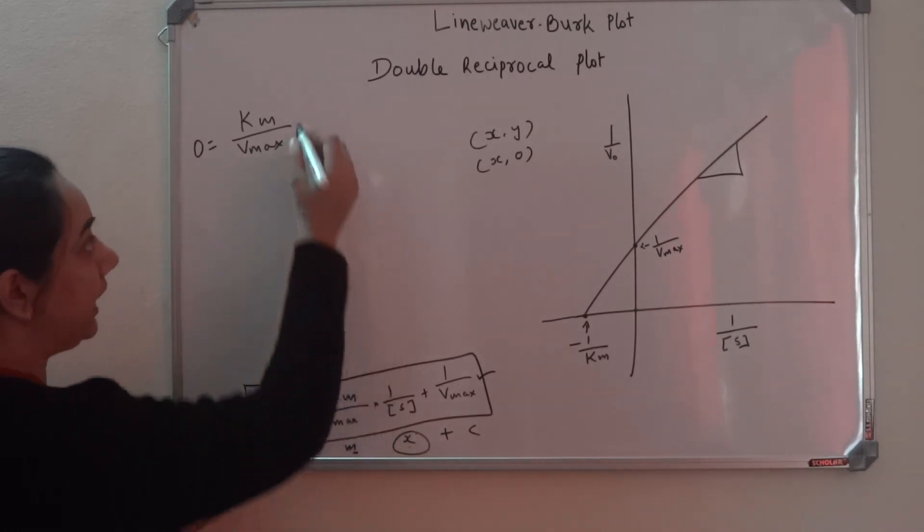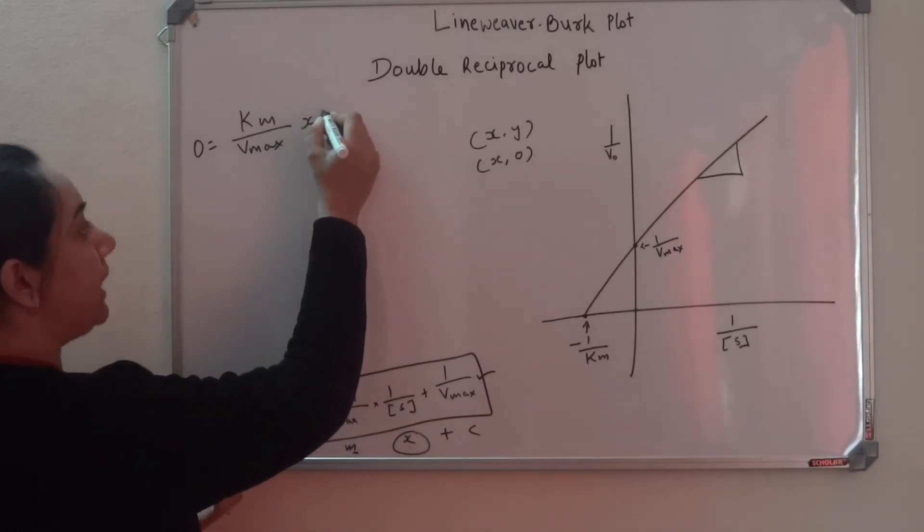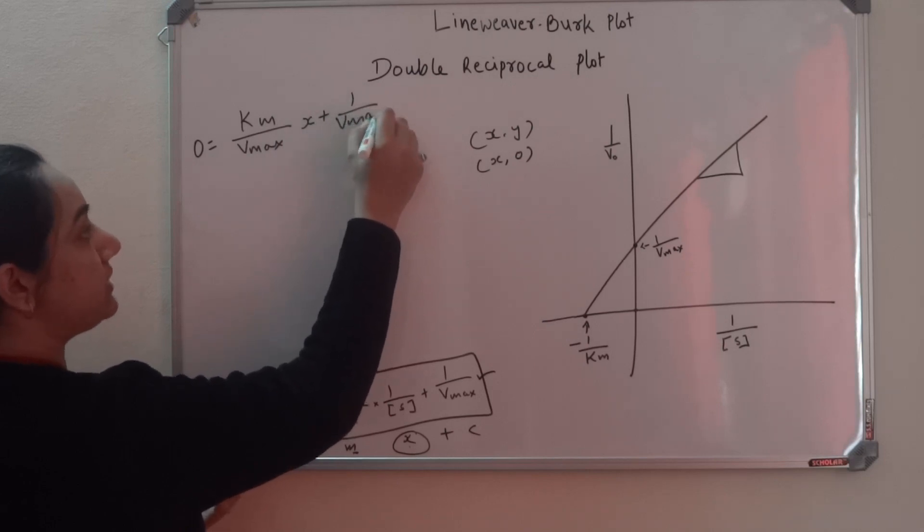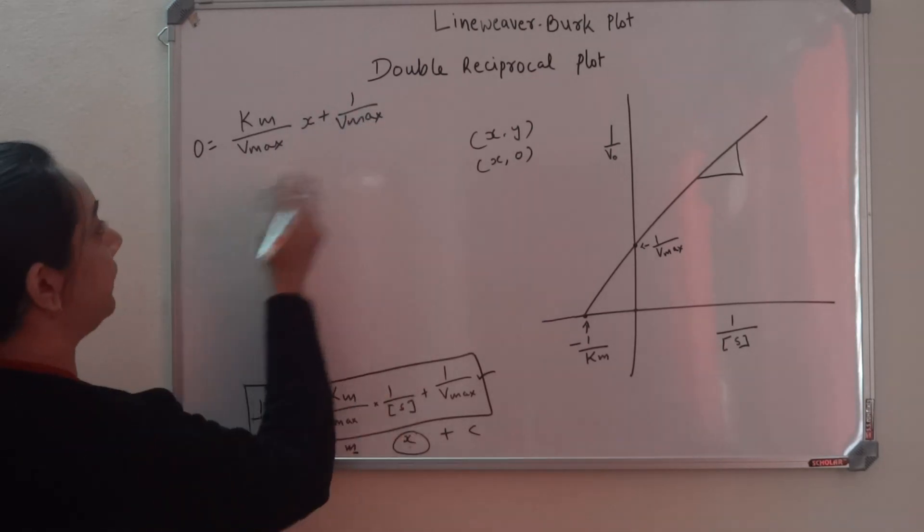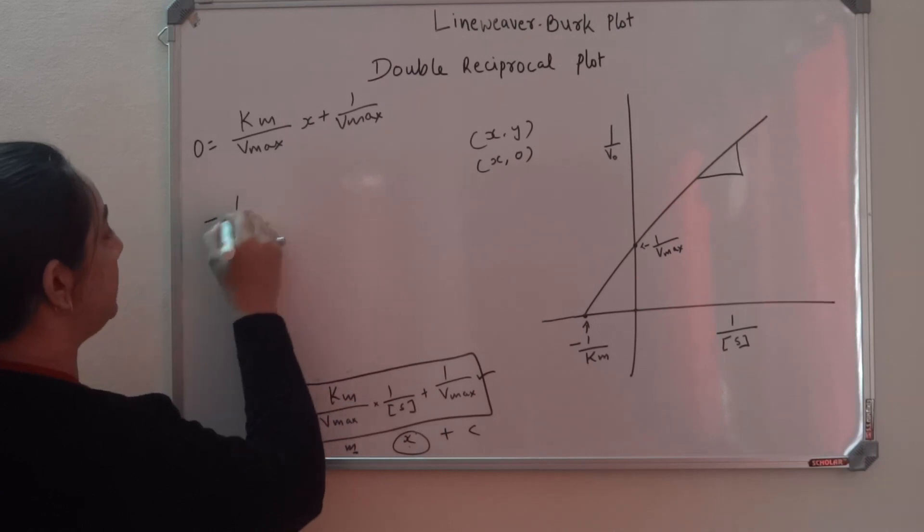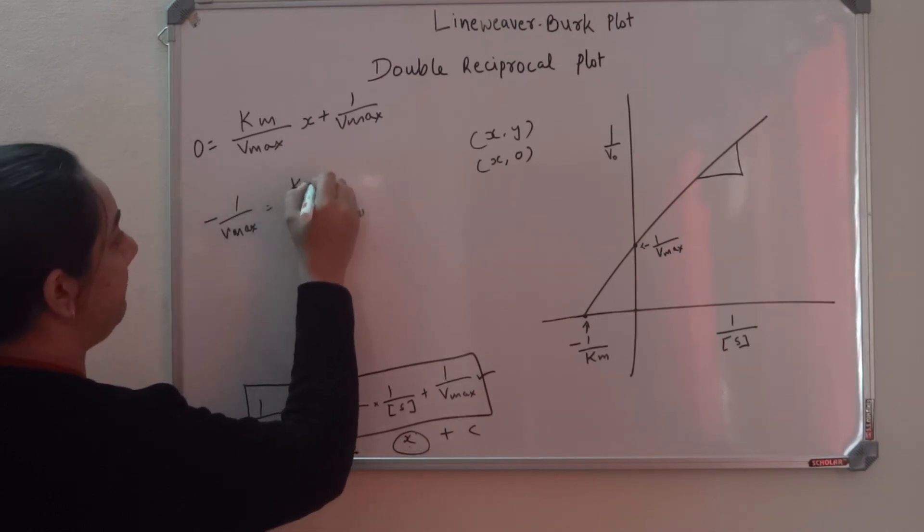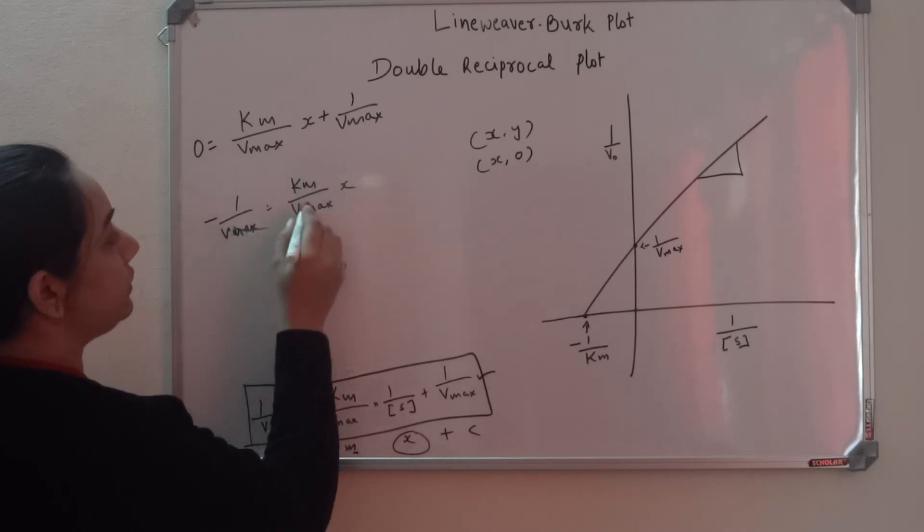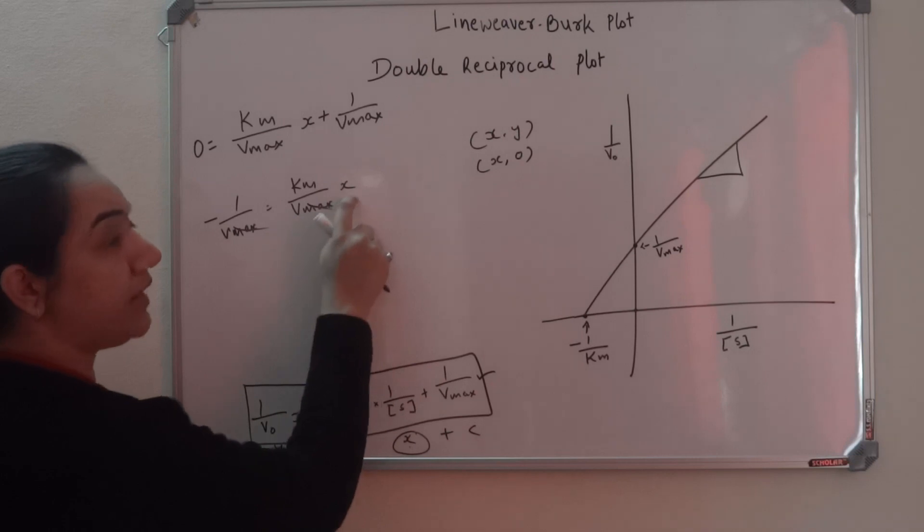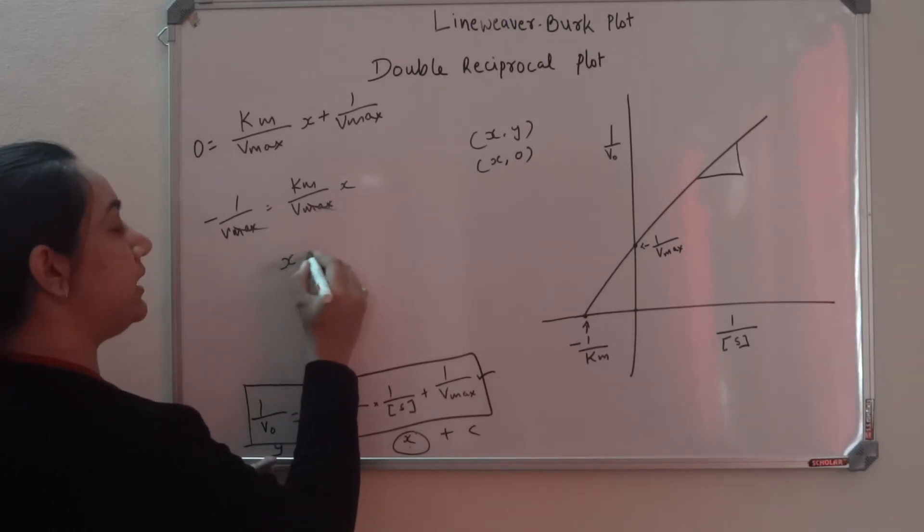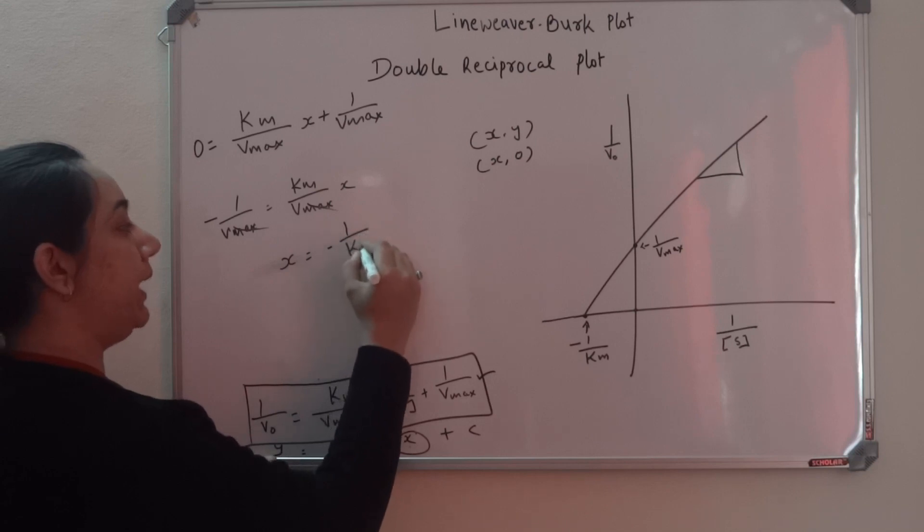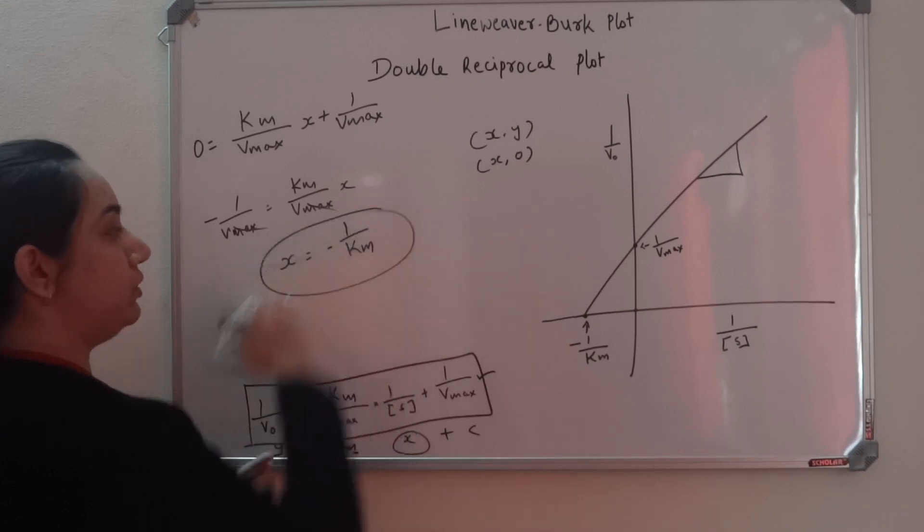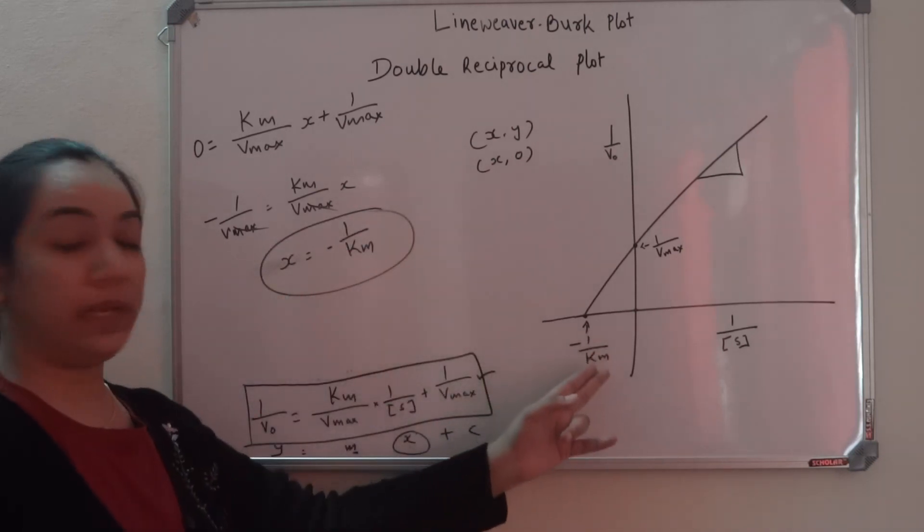Y is 0 equals Km by Vmax into 1 by S, which is my x, so I'm writing it as x plus 1 by Vmax. Let's simplify this. Take Vmax over, so minus 1 by Vmax equals Km by Vmax into x. Vmax cancels out, so x equals minus 1 by Km. So you see how I got this value.